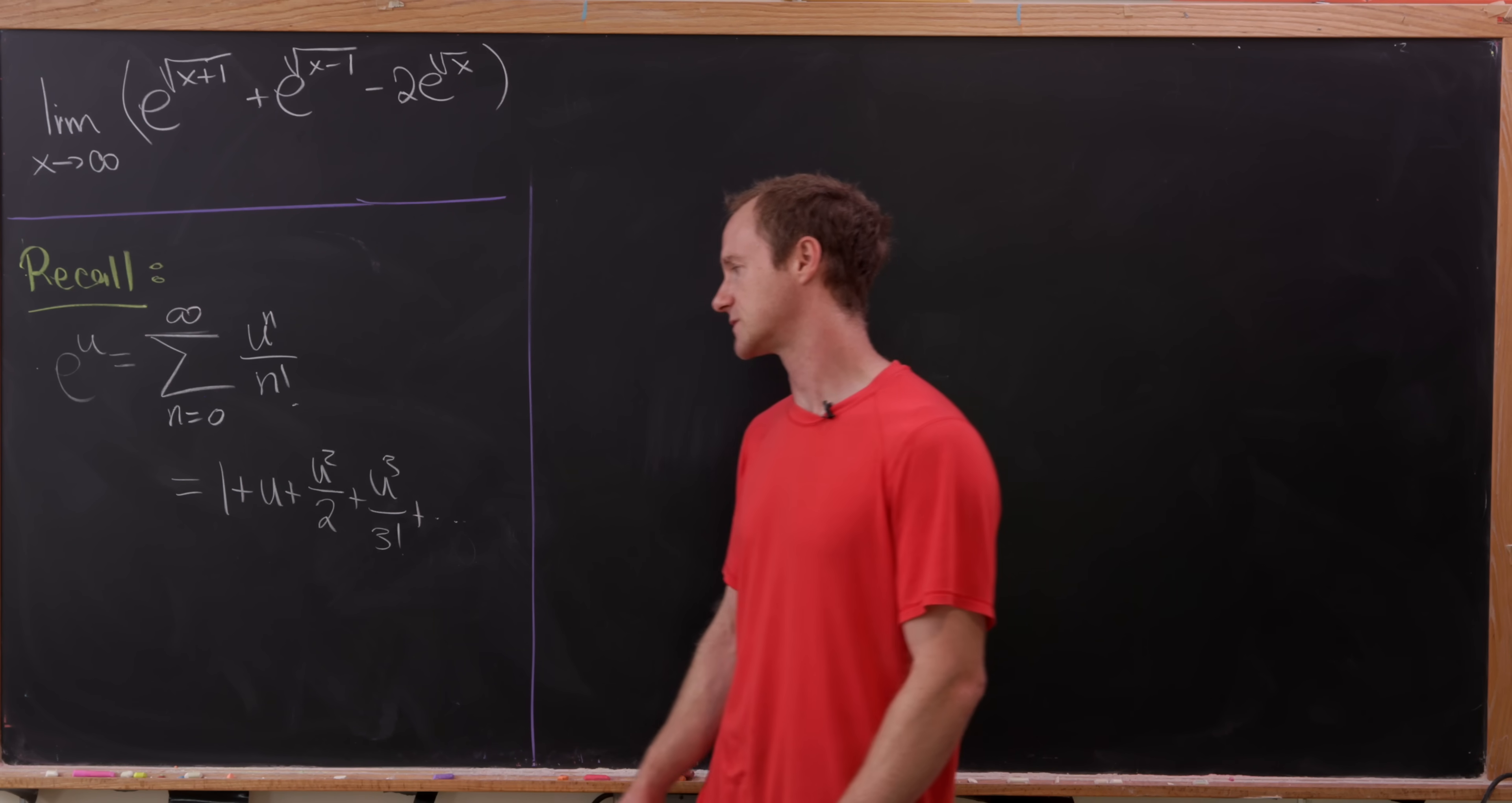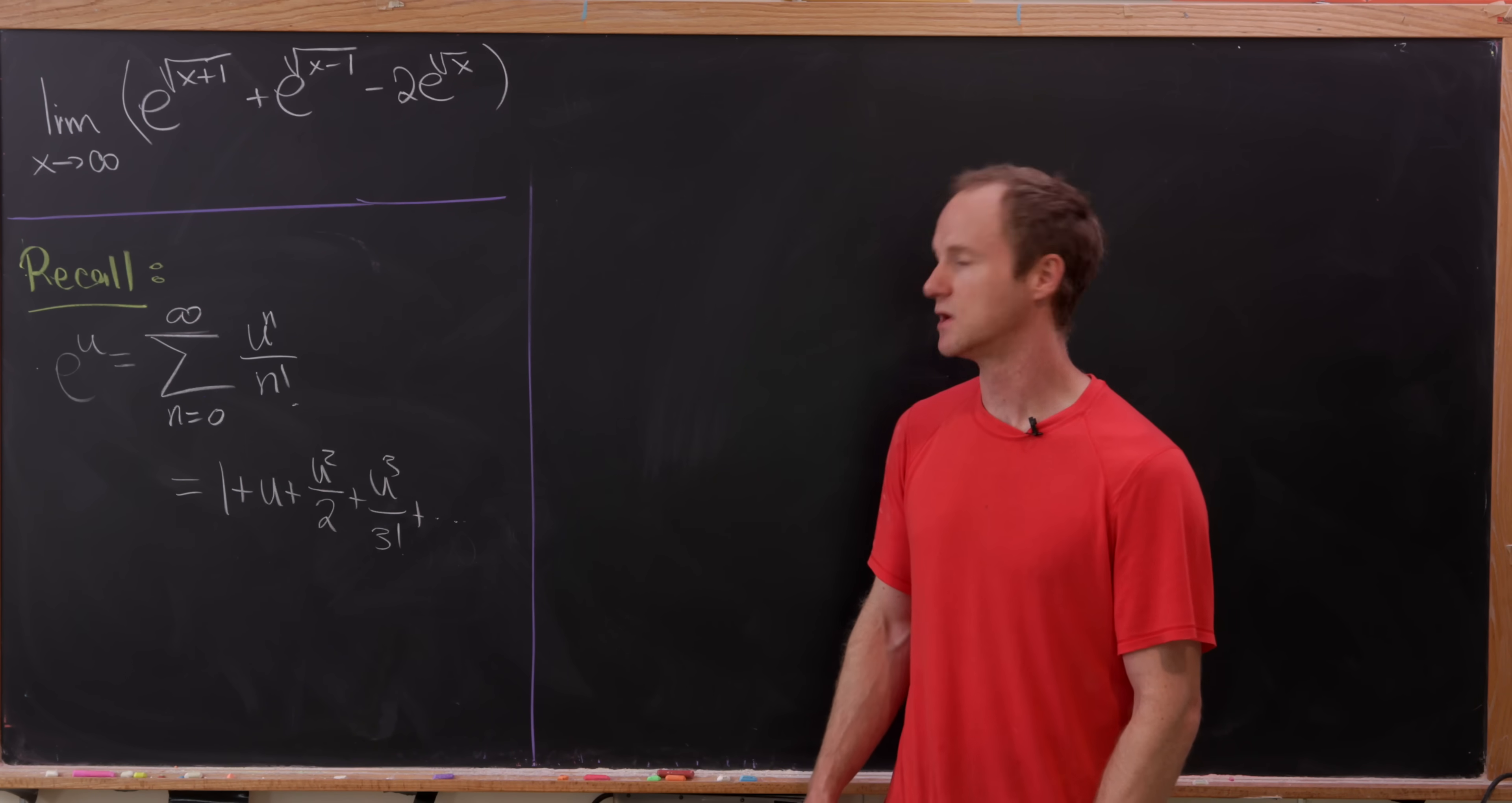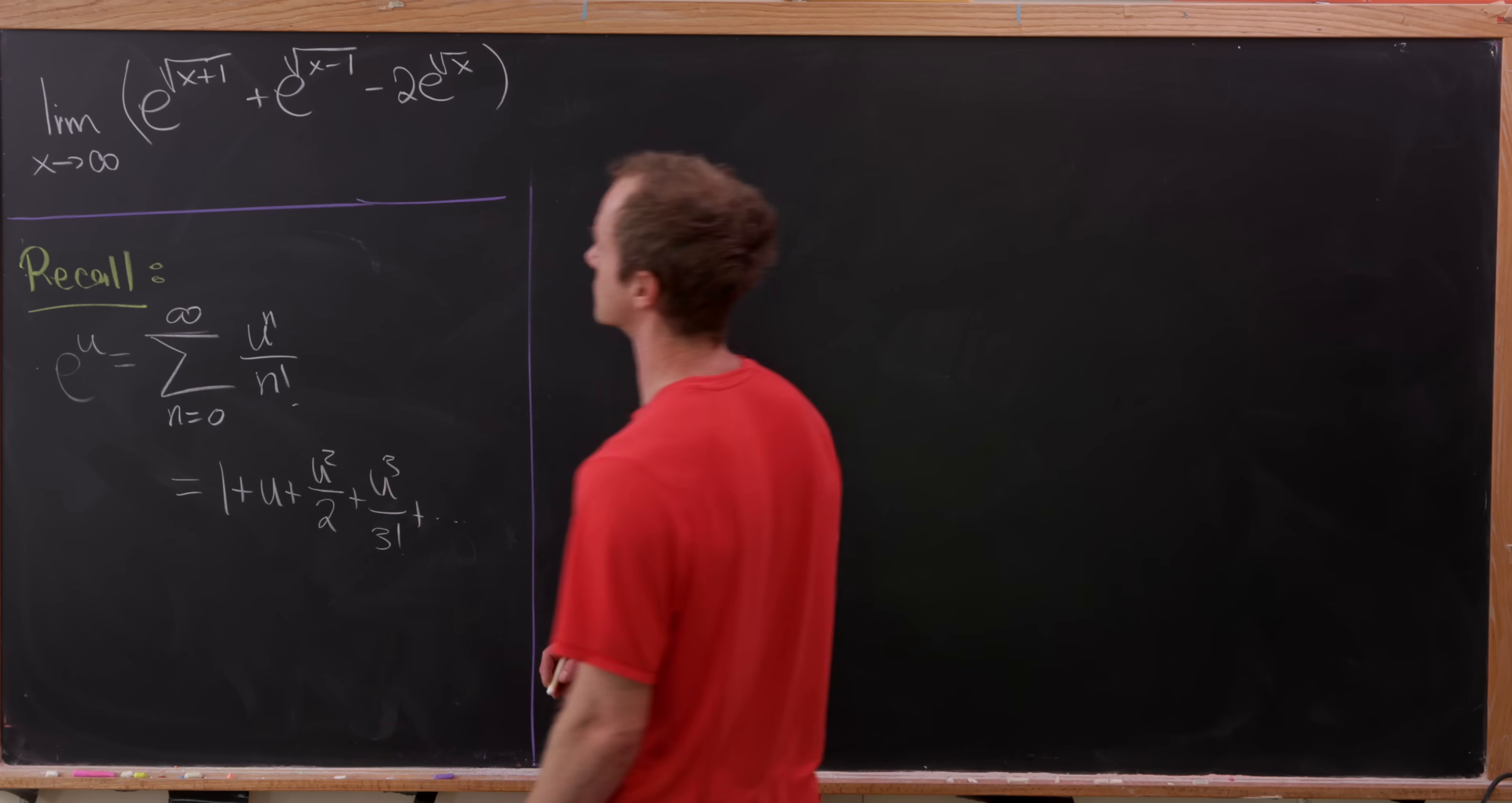In other words, the first couple of terms go like this. You have 1 plus u plus u squared over 2 plus u cubed over 3 factorial plus u to the 4th over 4 factorial and so on and so forth.